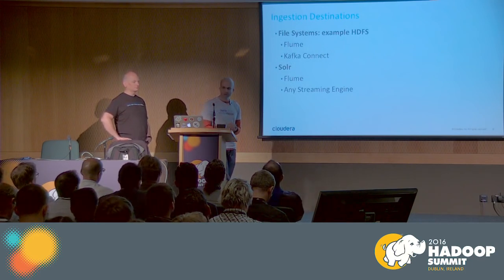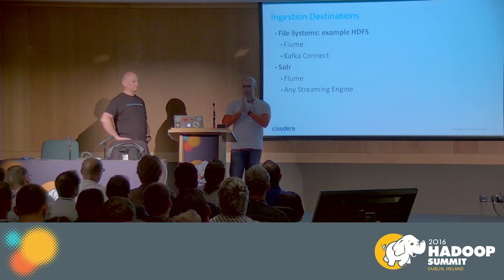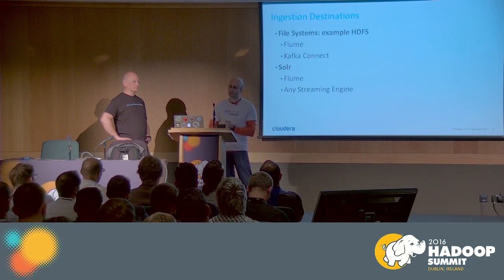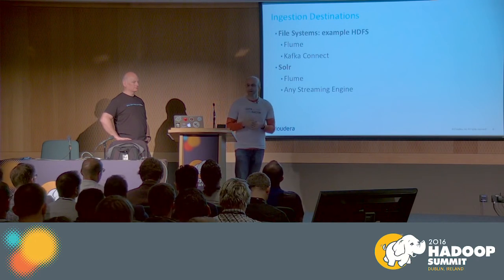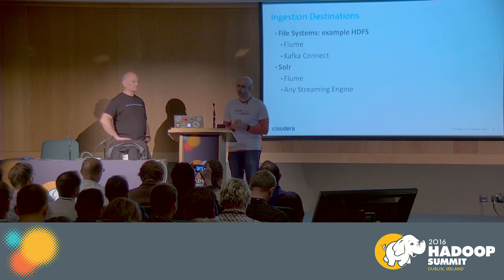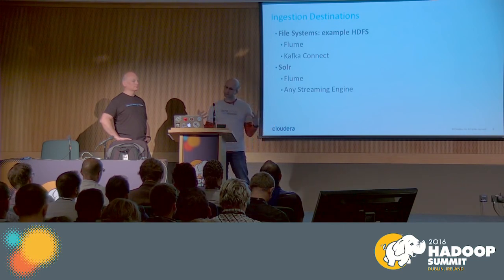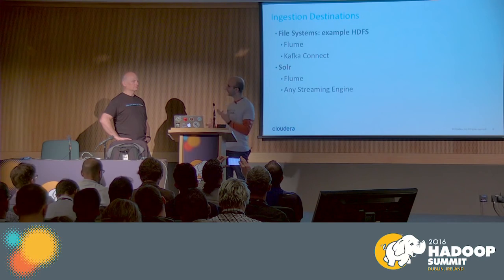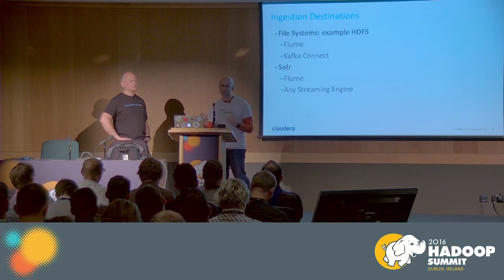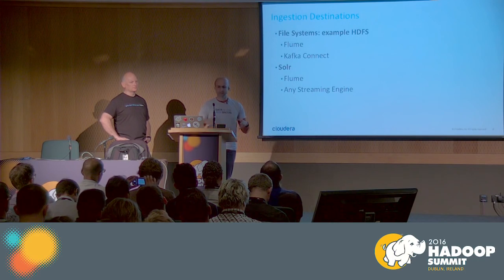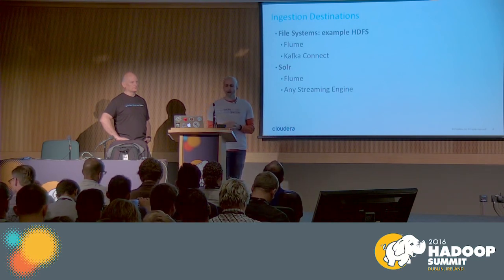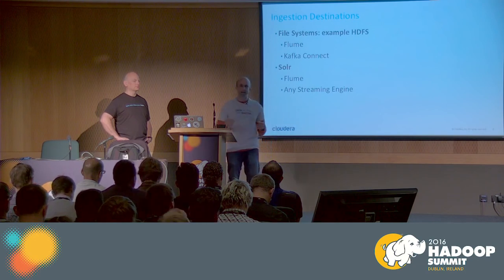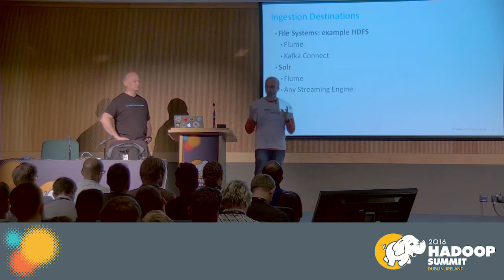Ingestion isn't sexy, but the basics work well. When I go into a place, I normally just use Flume — it's been working for almost a decade. There's a new contender in Kafka Connect, which is still very young, started about six to eight months ago, and doesn't yet have connectors for everything or widespread adoption testing. You can also use Spark Streaming, Flink, or Storm, but those aren't optimal and aren't really built for pure ingestion use cases.